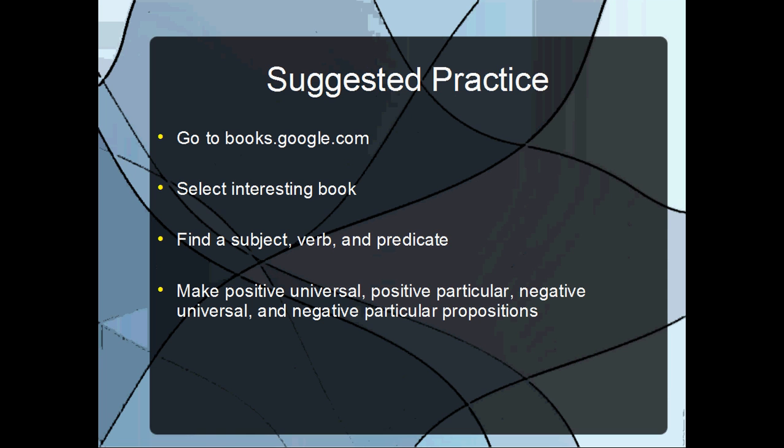Okay, and now here is an idea for you to get some extended practice. Go to books.google.com. Find a book that interests you if it's necessary to find an interesting book for you. Find a subject, verb, and a predicate. It can be any subject, verb, and predicate.